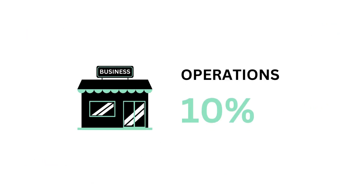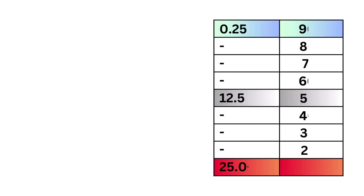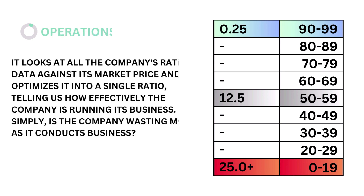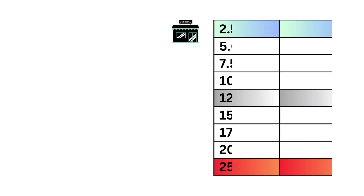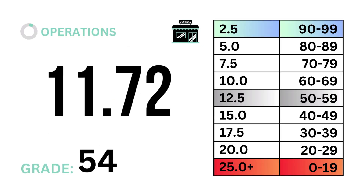Third, operations, which accounts for 10% of the business factor. Operations looks at all the company's ratio data against its market price and optimizes into a single ratio, telling us how effectively the company is running its business — simply, is the company wasting money as it conducts business? The models tell us that an operations ratio of 12.5 is considered average. Here's our operations ratio and operations grade.